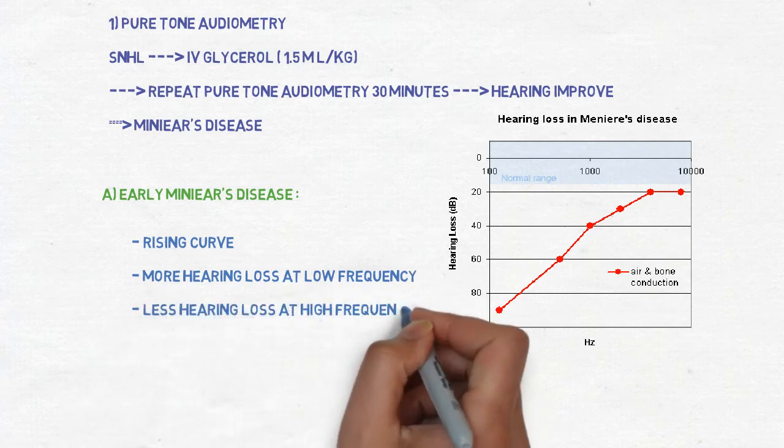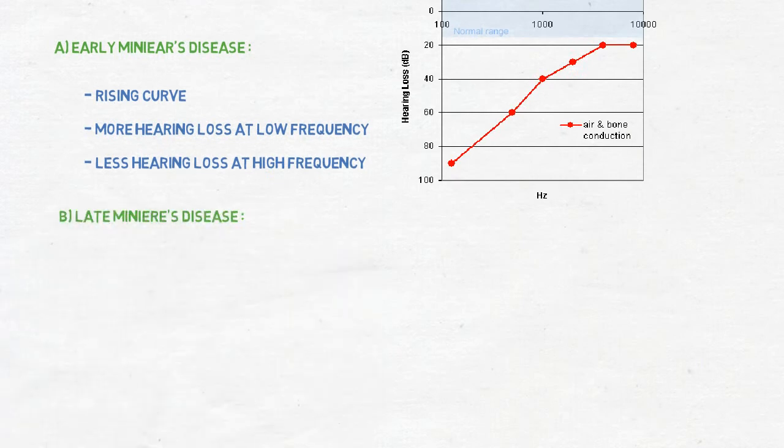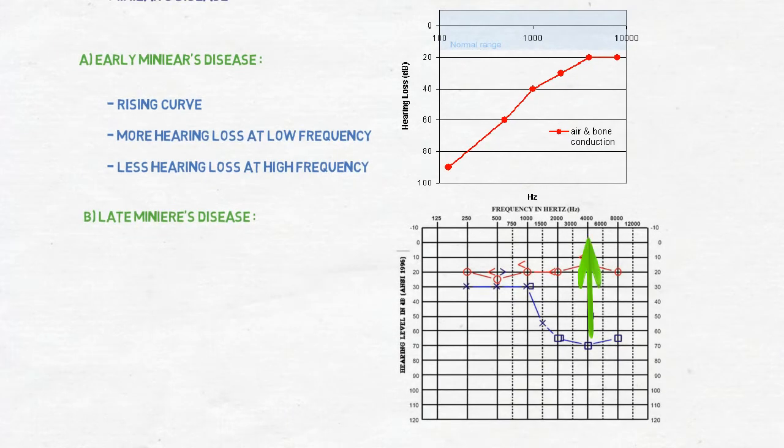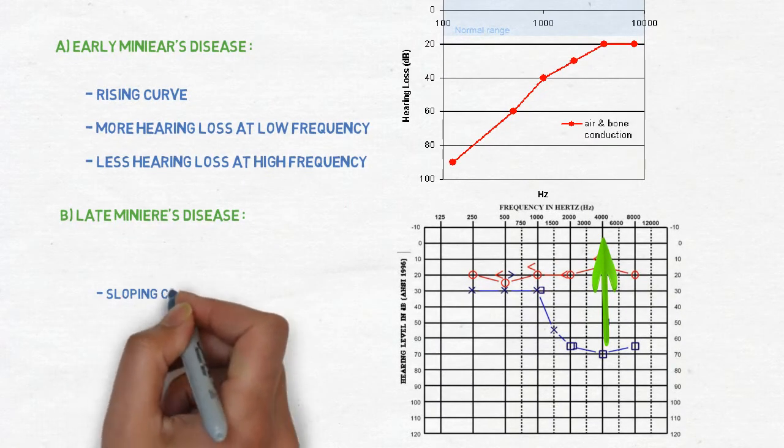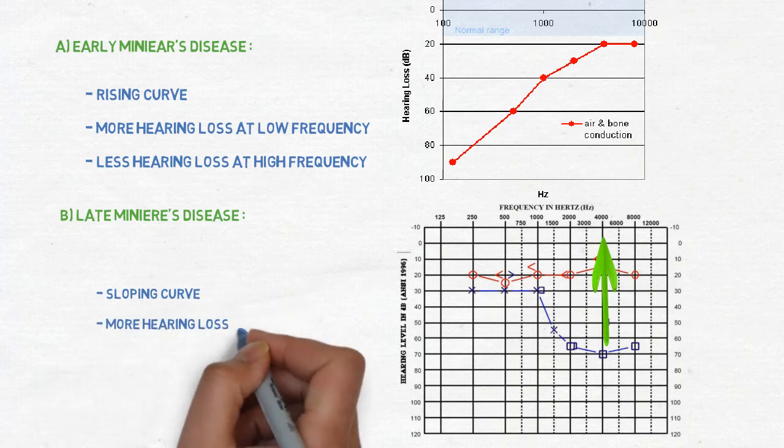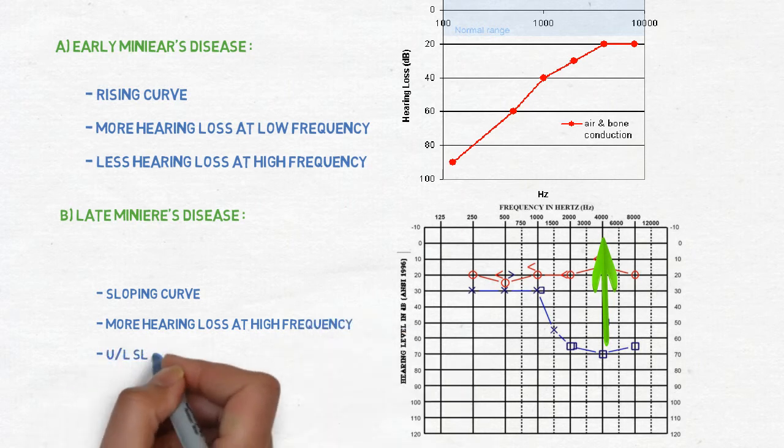Look at this diagram. And what happens in late Meniere's disease? So look at this graph. There is a swooping curve. And more hearing loss at high frequency which is given in blue line. And this is unilateral swooping curve. So these are the properties of late Meniere's disease in pure tone audiometry.